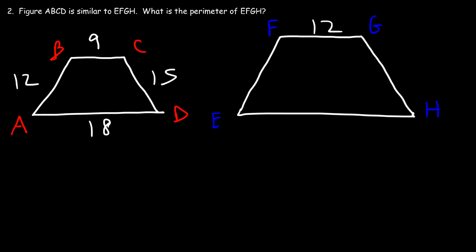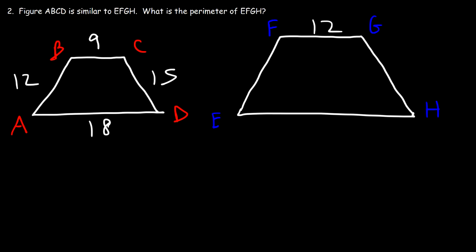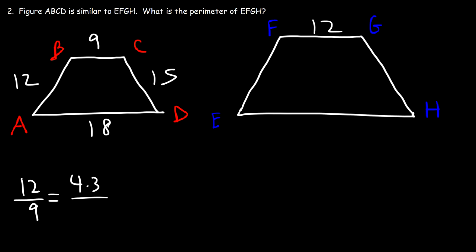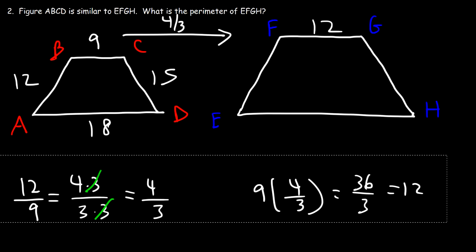Problem 2: figure ABCD is similar to EFGH. What is the perimeter of EFGH? To find the perimeter we need all four sides. Let's calculate the enlargement ratio: take the second figure's side divided by the first — 12 divided by 9. Simplifying: 12 is 4 times 3 and 9 is 3 times 3, canceling a 3 gives an enlargement ratio of 4 over 3.